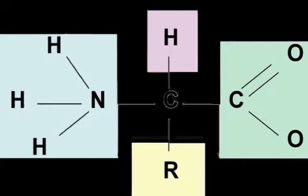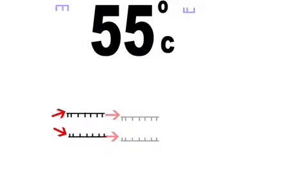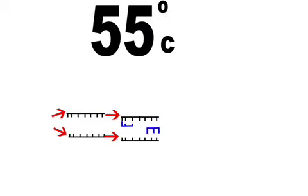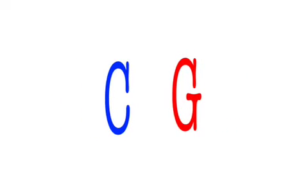Once we located the amino acid we wanted to change, we began to design the primer and took special care to make sure the mutated primer would anneal to the bacterial DNA with a strong bond. We did this by making sure the DNA section starts and ends with a C or a G, so it has the strongest bond possible.